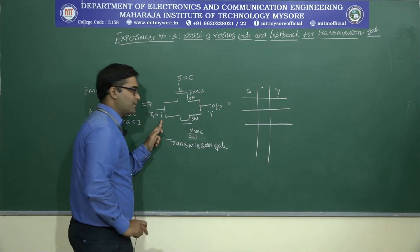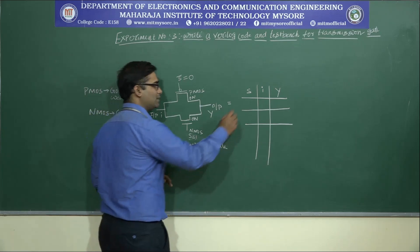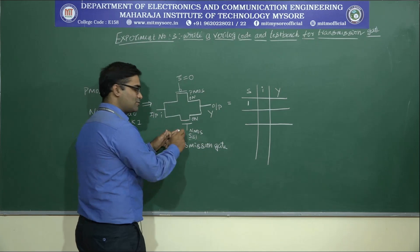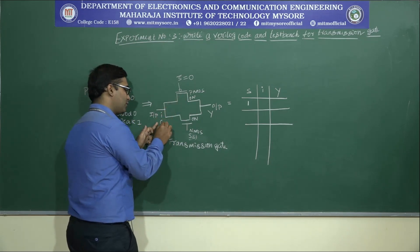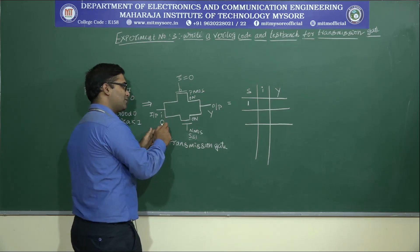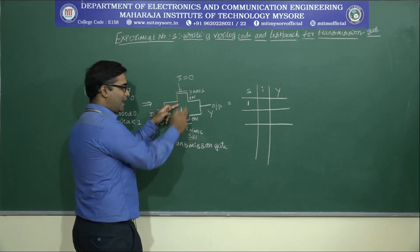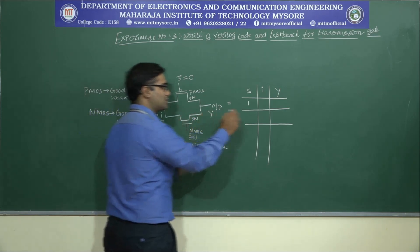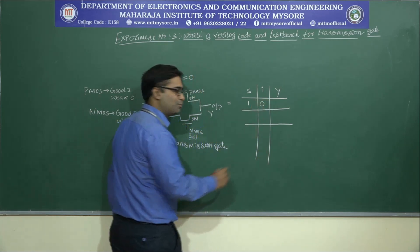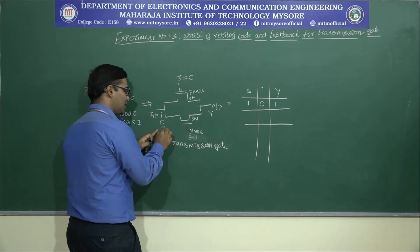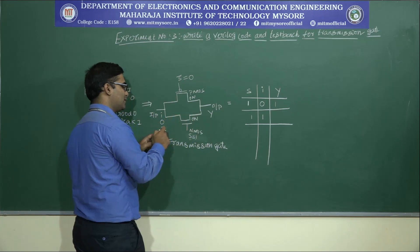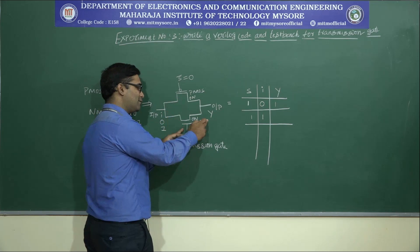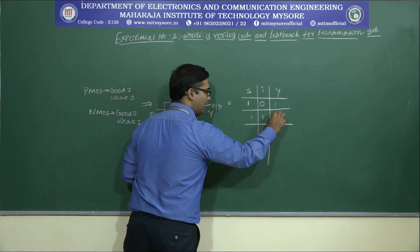With both transistors as closed switches when s equals 1, whatever input we provide passes through both pMOS and nMOS to the output. If we provide input 0, then the output is 0. If we provide input 1 when the select signal is 1, then the output is also 1. Whatever inputs we give, they move through pMOS and nMOS because both transistors are in the ON state with closed switches, and the output equals the input.